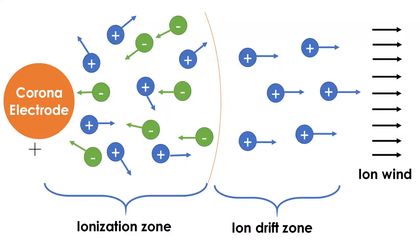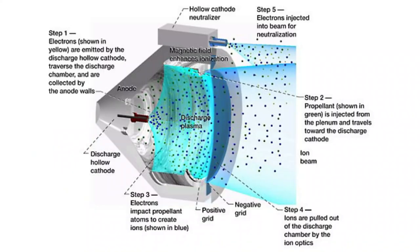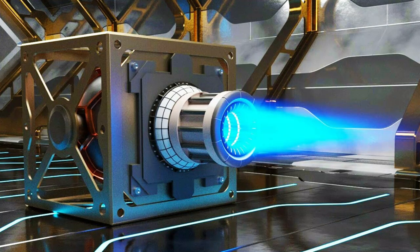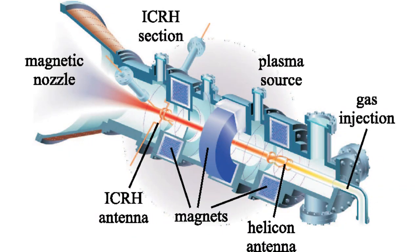There are different methods of creating propulsion using electro-hydrodynamics that have been explored. One is called ionic wind. The second method is called an ionic thruster and third is a plasma jet. The commonality in all methods is the creation of charged particles and their acceleration afterwards through a magnetic field.